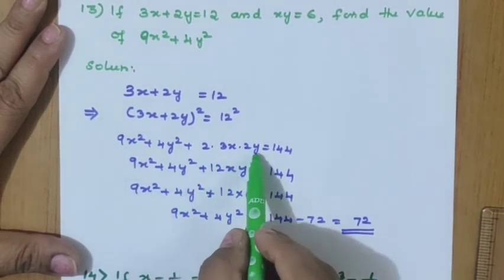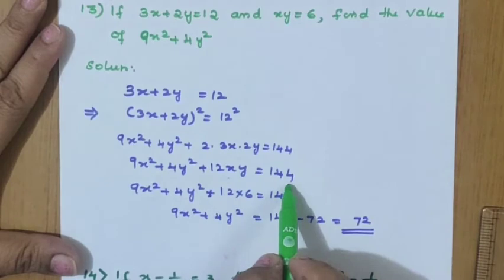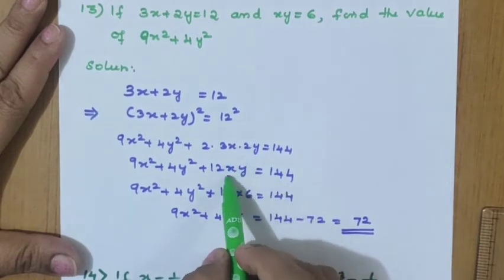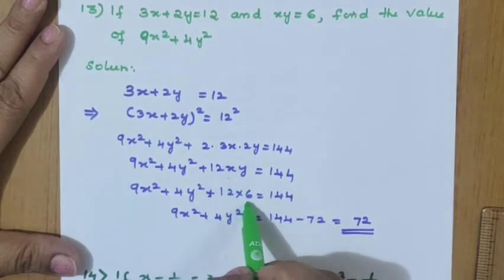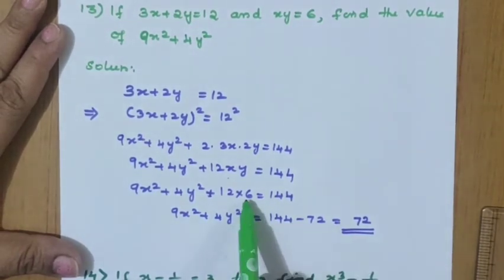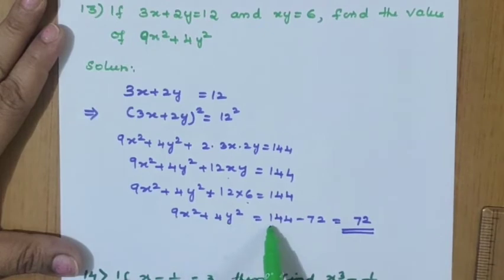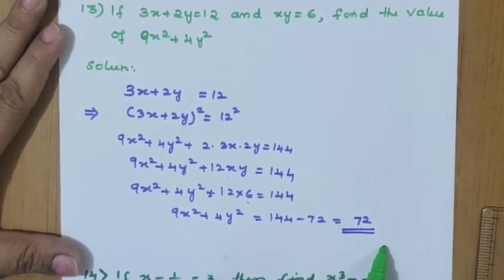So 9x² + 4y² plus the middle term 12xy equals 144. But xy is also given, so substitute: 12 into 6 is 72. Taking 72 to the other side, 9x² + 4y² equals 144 minus 72, which is equal to 72.